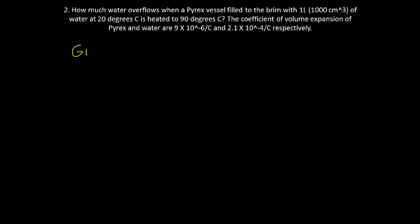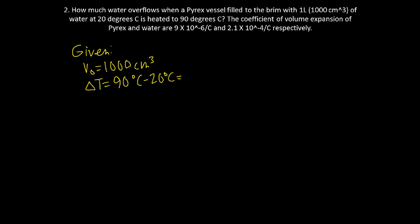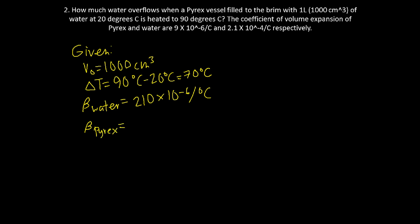The given values are: V0 equals 1 liter or 1,000 cubic centimeters. Delta T equals 90 degrees Celsius minus 20 degrees Celsius, which equals 70 degrees Celsius. Beta of water equals 210 times 10 raised to negative 6 per degree Celsius. Beta of Pyrex equals 9 times 10 raised to negative 6 per degree Celsius.